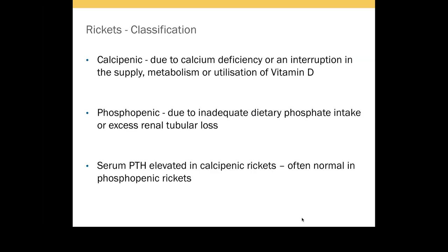Calcipenic rickets occurs because of vitamin D deficiency, calcium deficiency, or both together. The other type is phosphopenic rickets, where dietary phosphate intake is inadequate or there is excess renal tubular loss. Whatever the cause, serum phosphate levels are low in phosphopenic rickets.